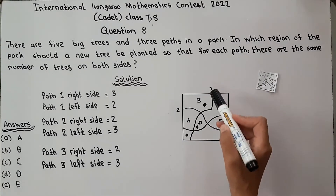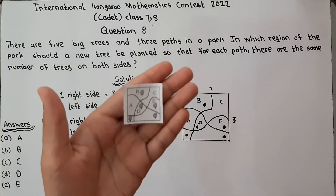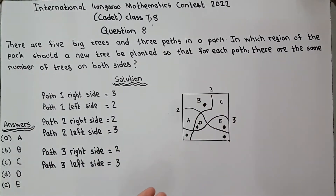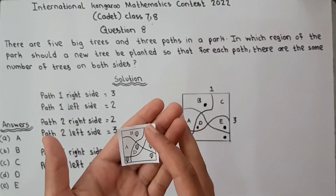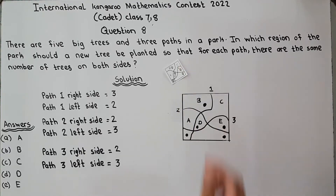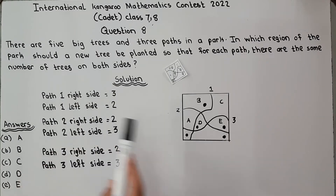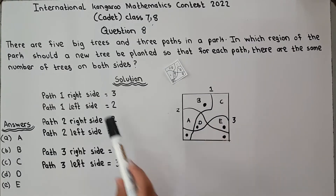Now if we look at the first path: this is the right side and this is the left side. On the right side of path 1 there are 1, 2, and 3 trees. On the right side there are 3 trees and on the left side of path 1 there are 2 trees.